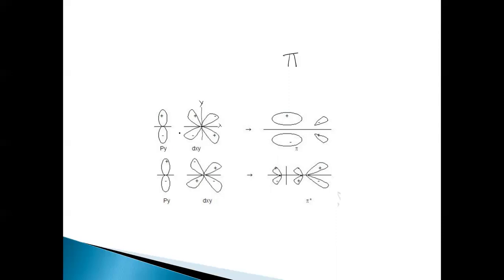When the combination occurs in phase, meaning addition is occurring — the positive lobe of P overlaps with the positive and negative lobes of DXY — that means constructive interference results in the formation of a pi bonding molecular orbital. This is of the pi type, and this is a bonding molecular orbital.